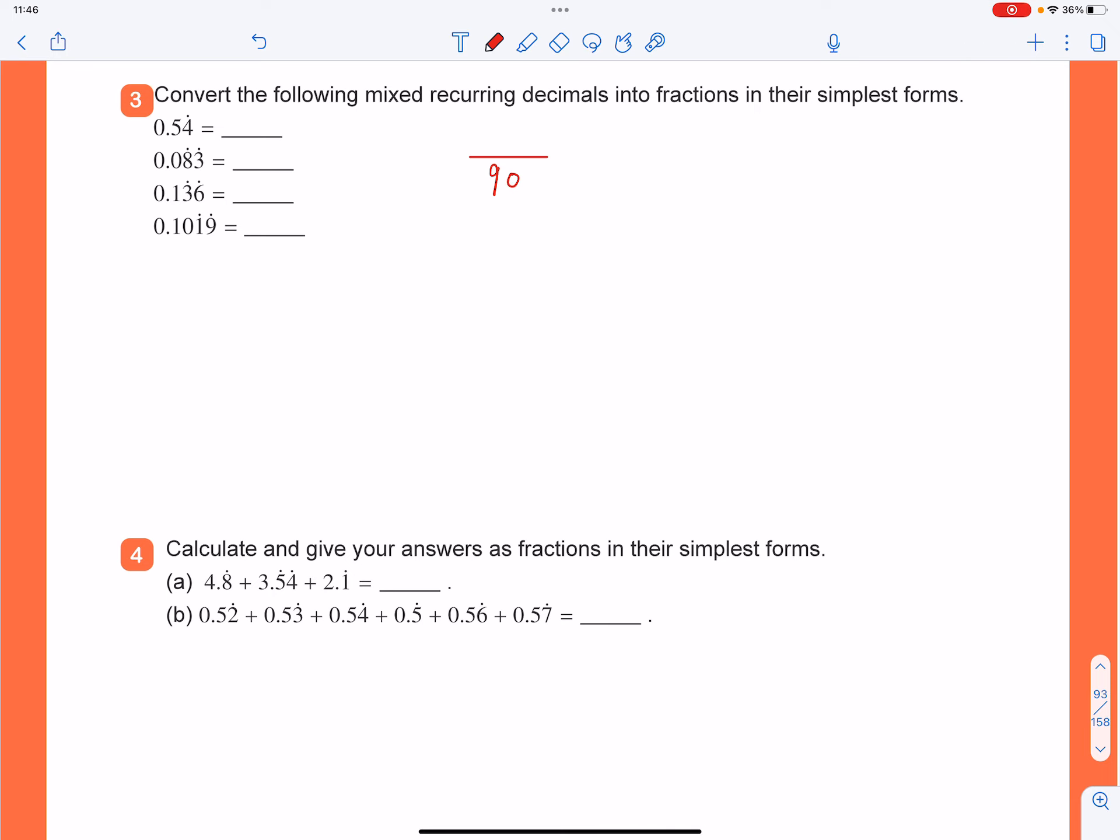And then, as for the numerator, you're going to use all the digits after the decimal point, which is 54, minus the non-recurring part, which is 5. And then you'll get the answer. And that will be 49 over 90.